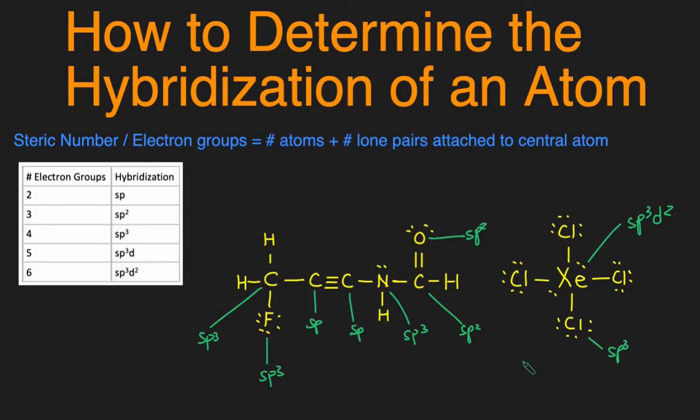And there you have it. That's how you determine the hybridization of atoms. It's really as easy as determining the number of electron groups and then just looking at this table right here. Of course, you might have to memorize this table for the test. So here's an easy way to do it.